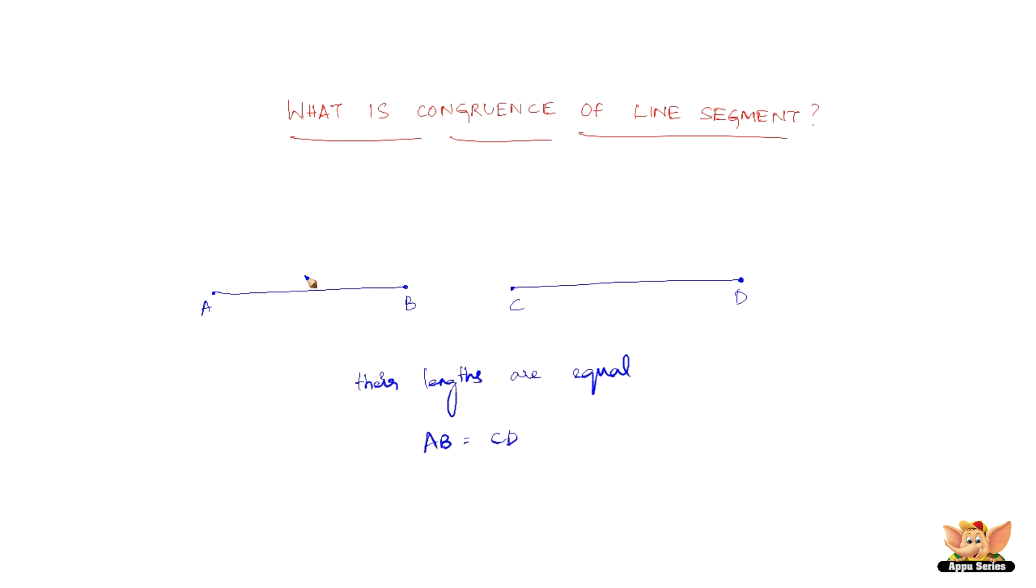Now in case AB is 6cm and CD is also 6cm, then the two line segments are said to be congruent.